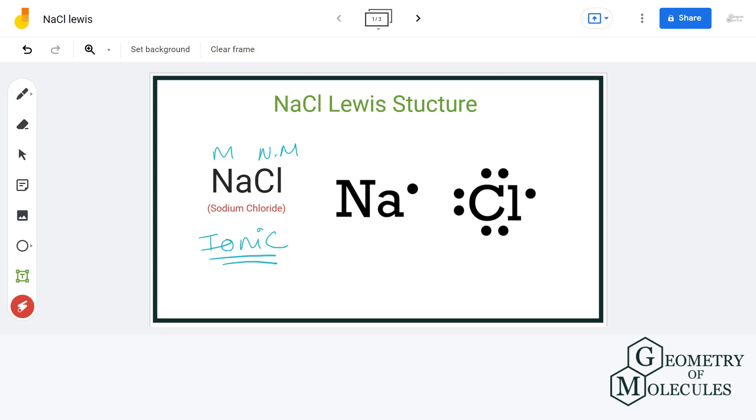In an ionic bond, metal donates its electron to a non-metal and gains a positive charge, and the non-metal gains a negative charge by accepting it.